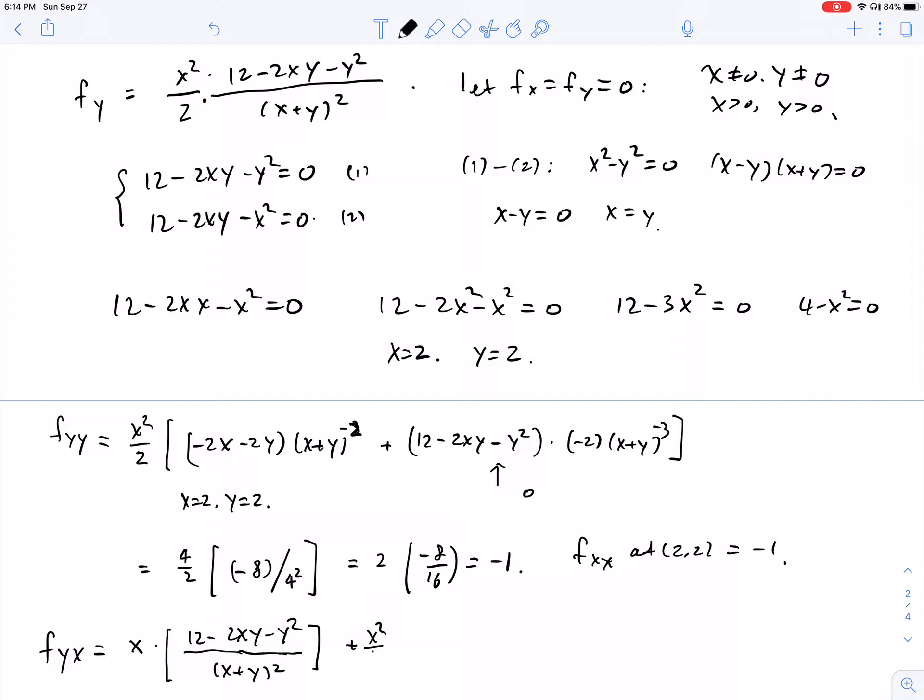The first term is just x squared over 2. When we take the second part, we're going to use the product rule instead of the quotient rule. So we have 12 minus 2xy minus y squared, take the derivative with respect to x, and that means we have negative 2y left, and then x plus y to the negative 2. And then we keep this term 12 minus 2xy minus y squared, and the derivative of x plus y to the negative 2 is negative 2 times x plus y to the negative 3.